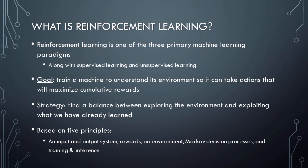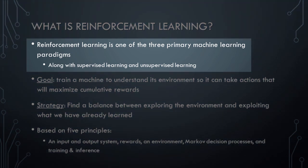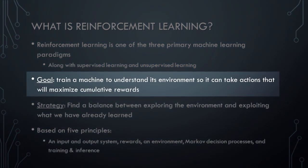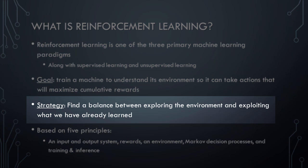To begin, let's learn what is really meant by reinforcement learning. Along with supervised learning and unsupervised learning, reinforcement learning is one of the three primary paradigms of machine learning. In supervised learning, a machine uses matched pairs of input and output values in order to try to learn a general function for predicting the outputs based on the inputs. In unsupervised learning, a machine attempts to discover previously unknown patterns in a data set without the benefit of any prior knowledge about the data. By contrast, the goal of reinforcement learning is to train a machine to understand its environment in such a way that it can learn to take actions that will maximize its cumulative rewards. This is accomplished by trying to find an optimal balance between continuing to explore the environment on the one hand and exploiting what we have already learned about the environment on the other hand.